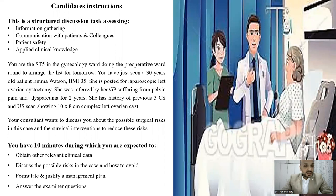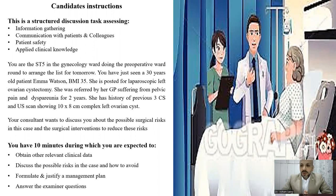Her name is Emma Watson. Her body mass index is 35, and she is posted for laparoscopic left ovarian cystectomy. She was referred by her GP as she is suffering from chronic pelvic pain for two years and dyspareunia. She has a history of previous three caesarean sections, and the ultrasound is showing a complex left ovarian cyst 10 by 8 centimetres. Your consultant wants to discuss with you the possible surgical risks in this case and the surgical interventions to reduce these risks. You will have 10 minutes, during which you are expected to obtain relevant and targeted clinical data, justify and formulate a management plan, discuss possible risks and how to avoid them, and answer the examiner's questions.